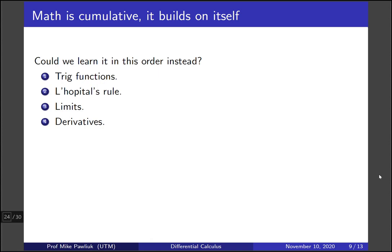Could we have instead learned it in this order? First trig functions, then L'Hopital's rule, then limits, then derivatives? Why or why not? Well, the issue here is that if we want to learn L'Hopital's rule first, we need to know what a derivative is. So it can't come before derivatives. We have to put L'Hopital's rule after derivatives. So that's partly why the limit sin x over x we needed to use simple things like geometry in order to solve.